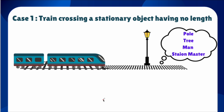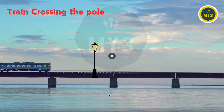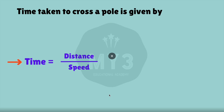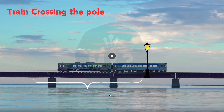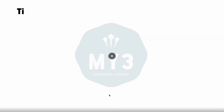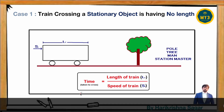Case one: train crossing a stationary object having no length. Let's assume the train is trying to cross a pole on the platform. The time taken to cross a pole is given by distance divided by speed. Here the distance covered is nothing but the length of the train itself. So time taken to cross a pole equals length of the train divided by speed of the train.